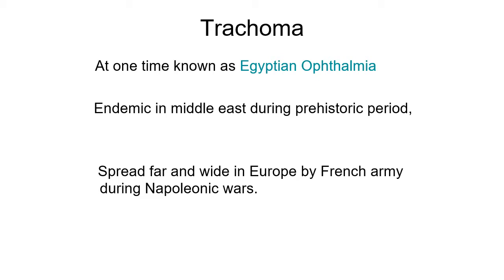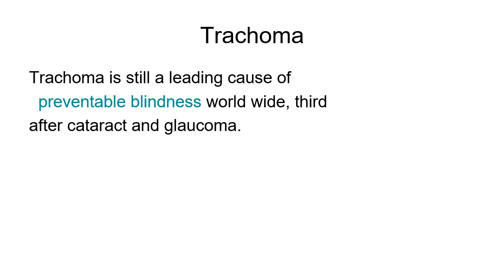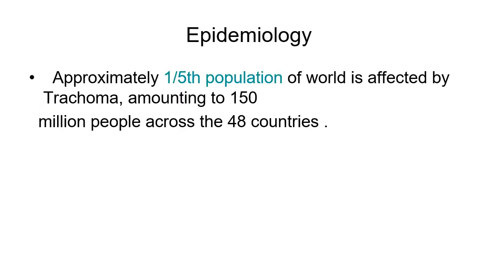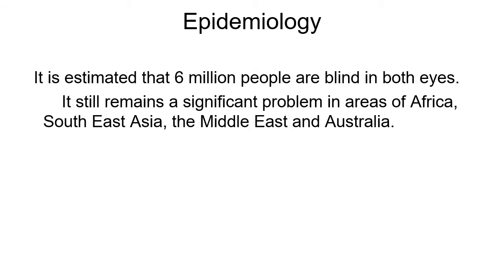Trachoma, at one time known as Egyptian ophthalmia, was endemic in the Middle East during prehistoric times and spread far and wide in Europe through the French army during Napoleon's wars. Trachoma is still a leading cause of preventable blindness worldwide — third after cataract and glaucoma. Approximately one-fifth of the world's population is affected, accounting for 150 million people across 48 countries, with an estimated six million people blind in both eyes.